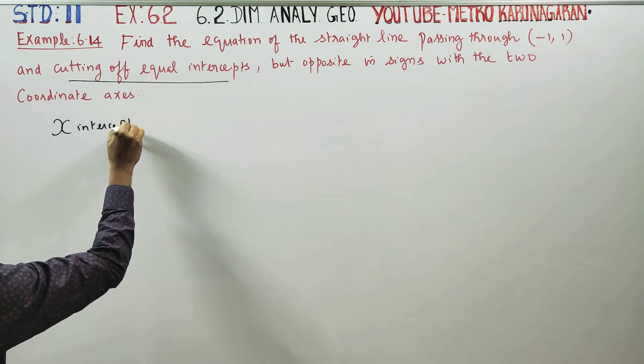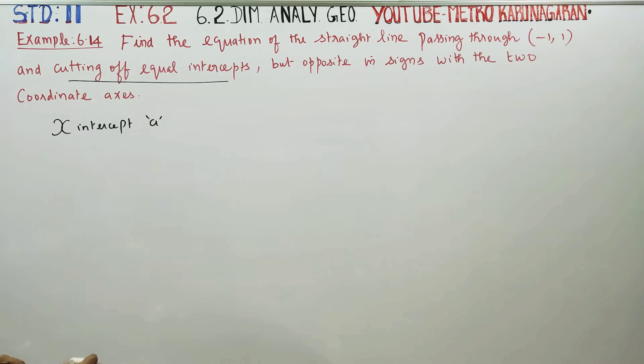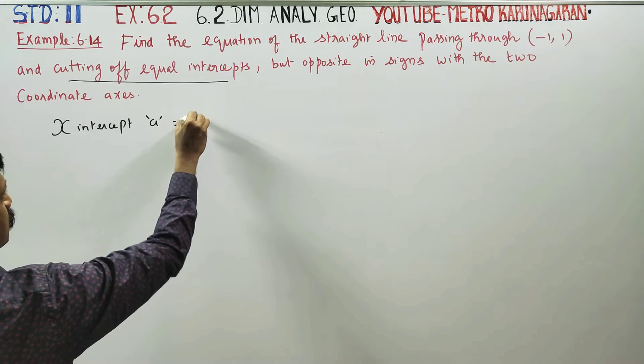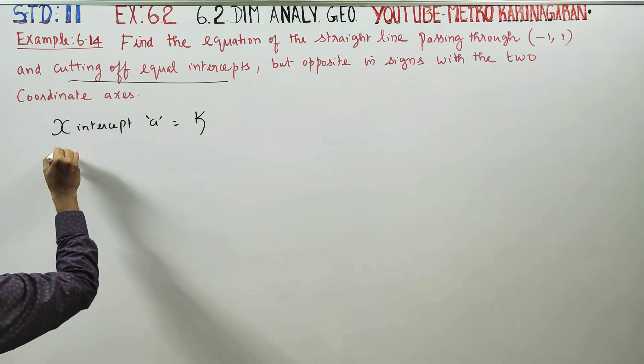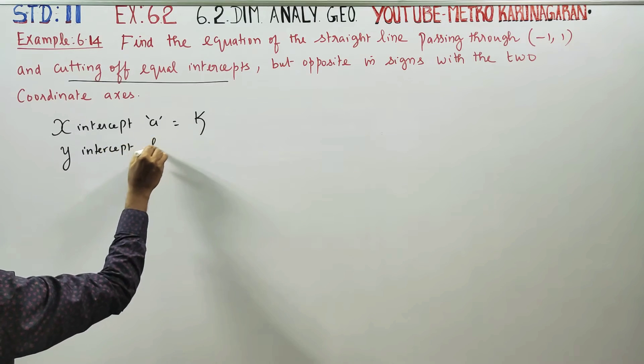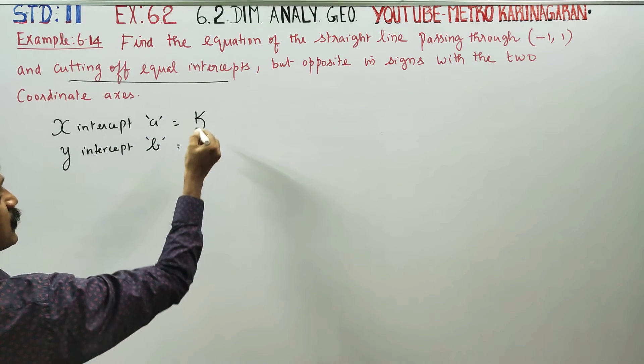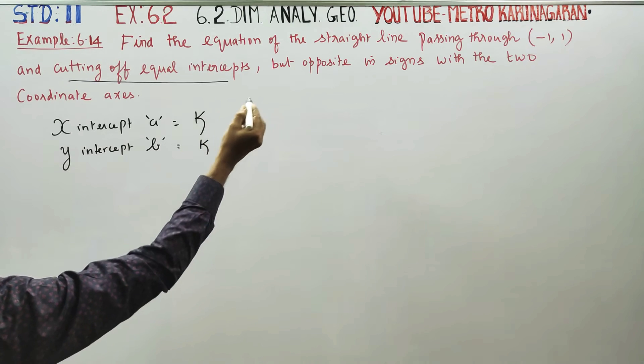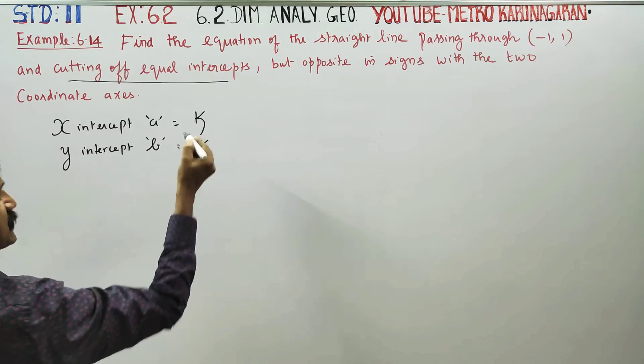If we say x-intercept, we say x-intercept is k. This is the opposite in sign. It's minus k.